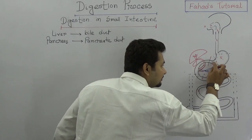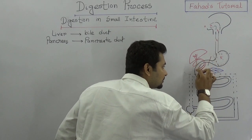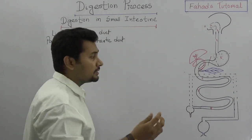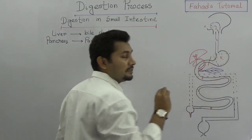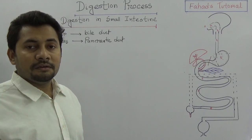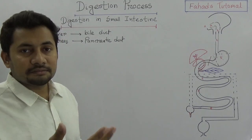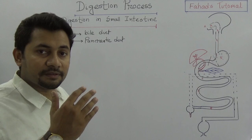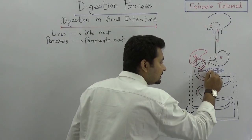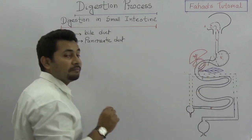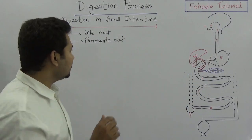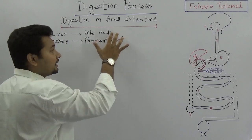After the digestion in the stomach, chyme is produced and comes into the duodenum. This chyme is strongly acidic — the pH in the stomach is around 1.2 to 2.5. Surprisingly, both the pancreatic juice and the bile are alkaline in nature.